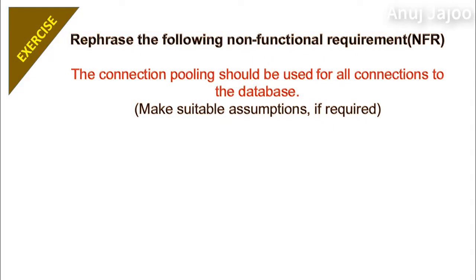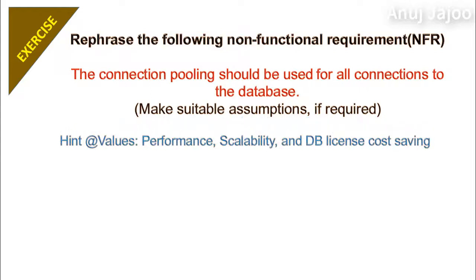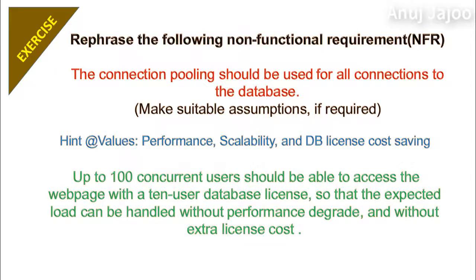Now consider the following non-functional requirement: the connection pooling should be used for all connections to the database. The value expected includes performance, scalability, and database license cost saving. The problem is that the stated requirement talks about how to do it, not what and why. The revised story could be: up to 100 concurrent users should be able to access the web page with a 10-user database license so that the expected load can be handled without performance degradation and without extra license cost. A note can be added: connection pooling may help. For non-functional requirements, the primary beneficiary is the customer paying to get the software built.